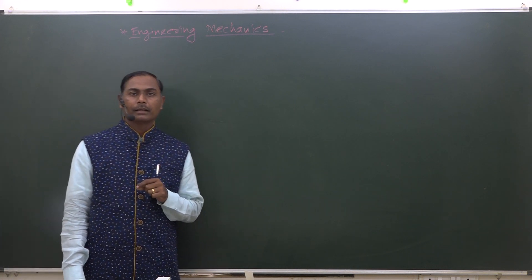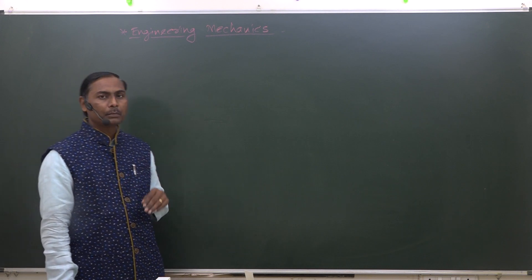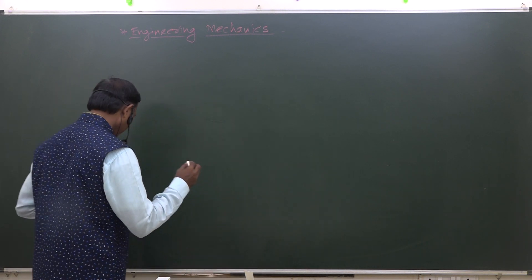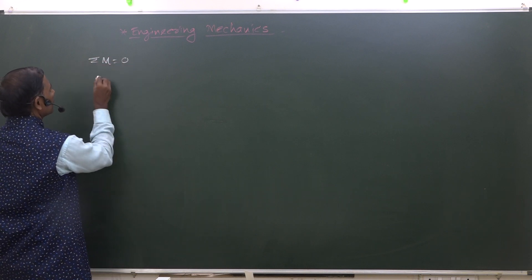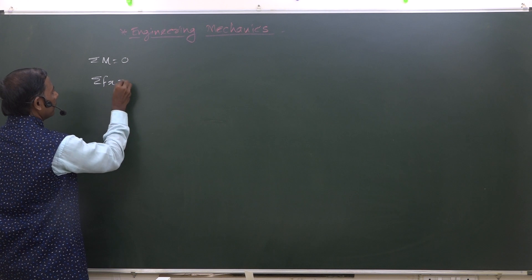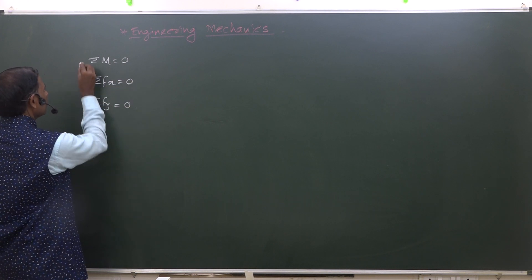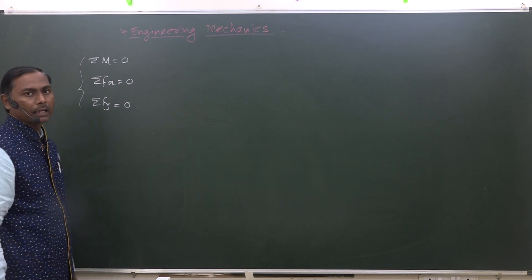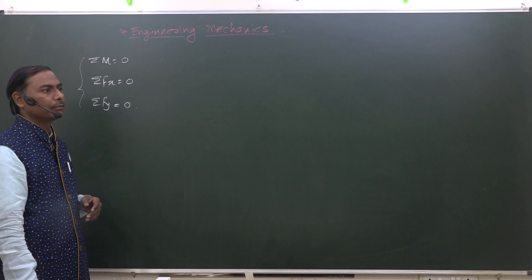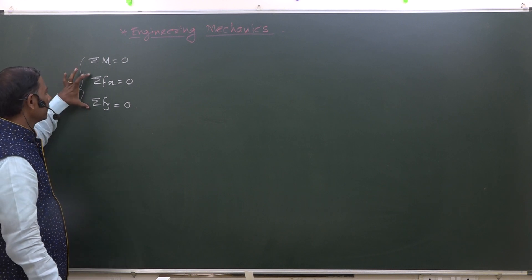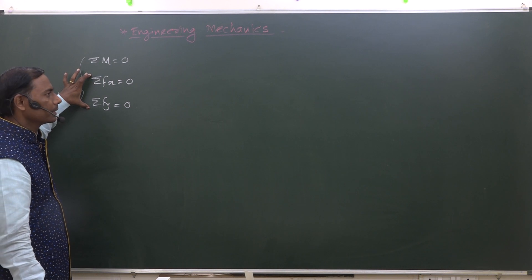Hello all, this is another topic in equilibrium. We already had a discussion of three conditions of equilibrium: summation M=0, summation Fx=0, and summation Fy=0. These are called conditions of equilibrium for a non-concurrent force system, also called the general force system. When it is concurrent, we have only two equilibrium conditions: Fx=0 and summation F=0.